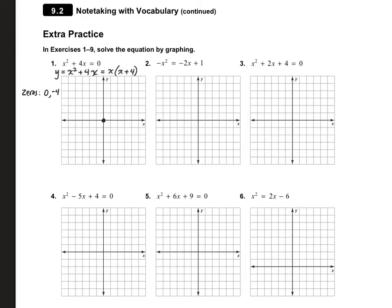So that means my zeros are 0 and negative 4. If I graph that, I have a 0 here and a negative 4 here. So that means my axis of symmetry is right in the middle at negative 2. Now I can find my vertex — it's going to be at negative 2, and then I need to plug that in: negative 2 squared plus 4 times negative 2, which gives us negative 4. So negative 2, comma, negative 4 is my vertex.